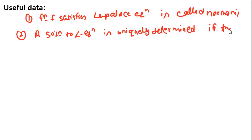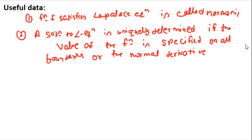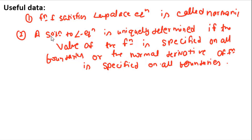The solution to the Laplace equation is uniquely determined if the value of the function is specified on all boundaries. That is, the solution is unique if the value of the function is specified at all boundaries, or if the normal derivative of the function is specified on the boundaries.